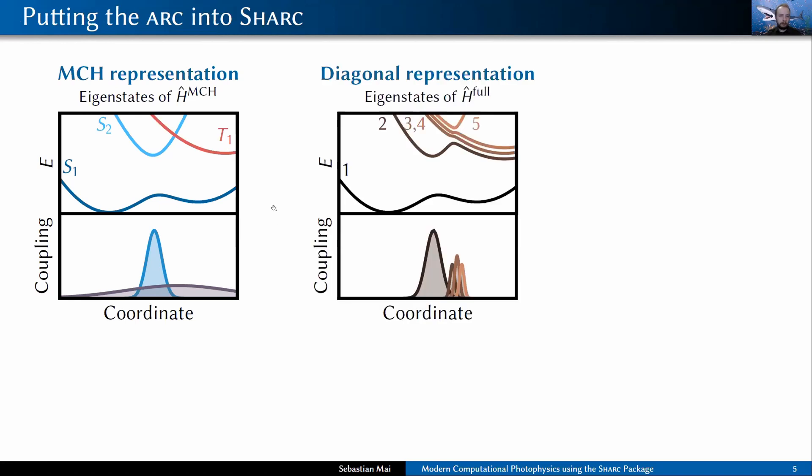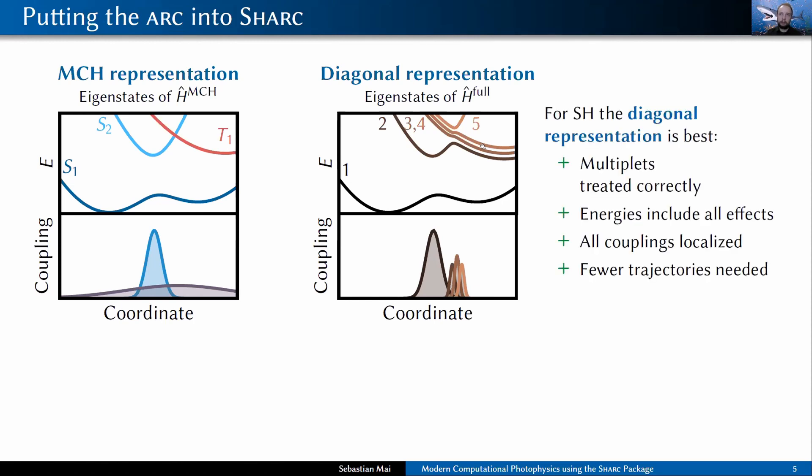A second possibility of representation is what we call diagonal representation, which are the electronic eigenstates of the full Hamiltonian. So the full Hamiltonian in this basis is diagonal. That's the reason for this name. In this basis, you do not have singlet and triplet states anymore. You have spin mixed, generally mixed states.